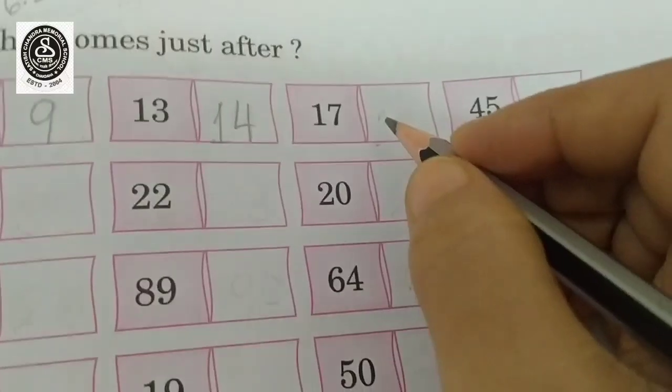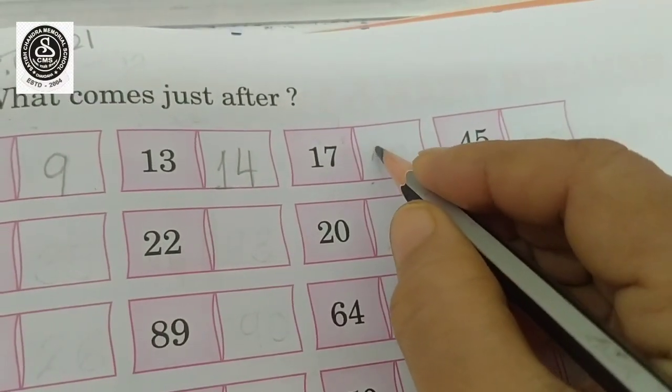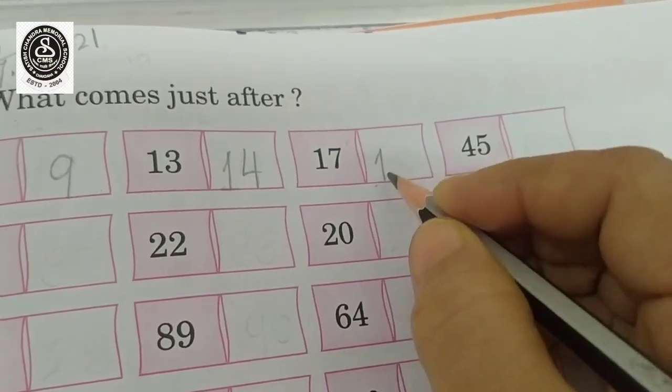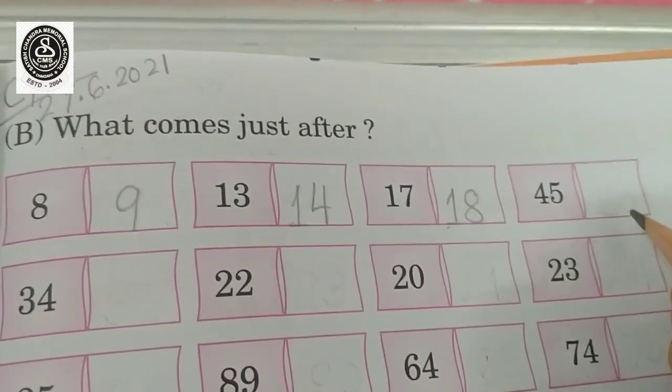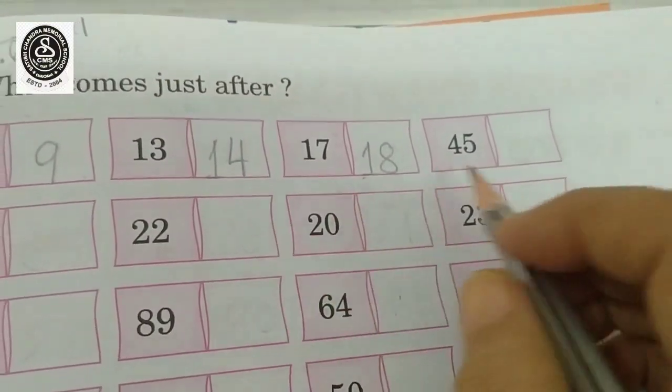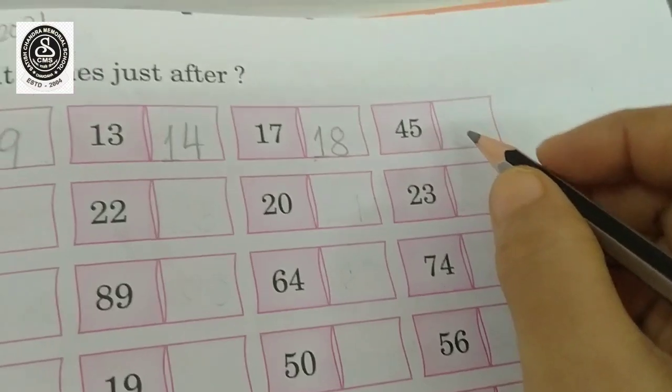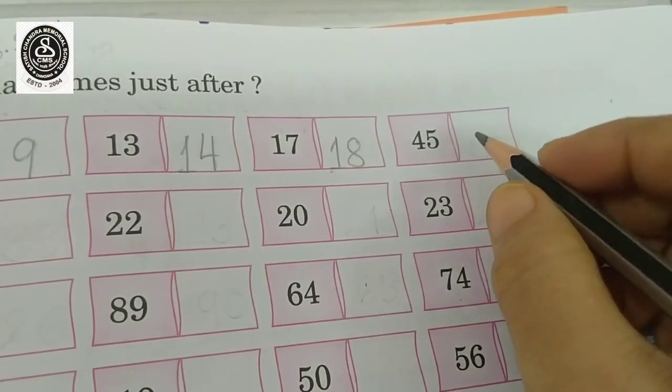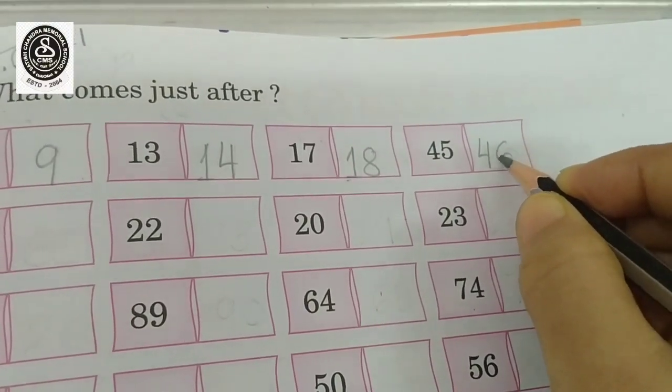What comes after 17? Yes, you are right. 18, 18. So that time you have to follow forward counting. Understood everybody? And what comes after 45, 46. 46.